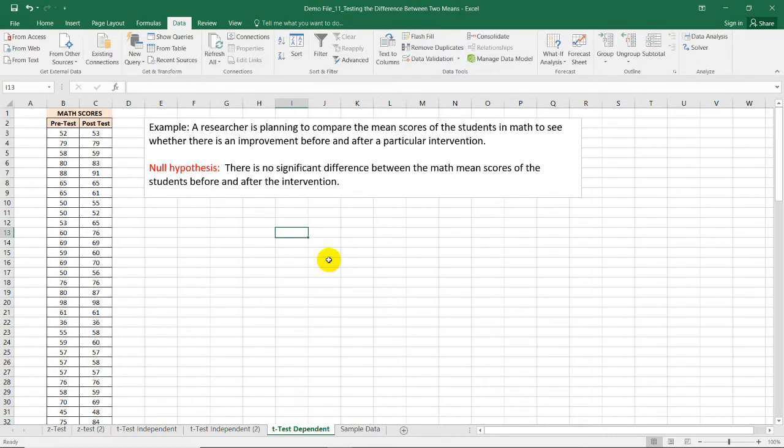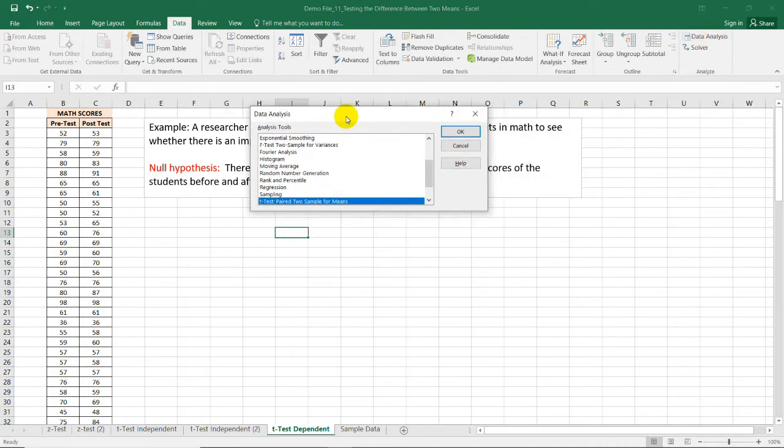To start the analysis, go to Data Ribbon. Select this Data Analysis function. If you don't have this function, make sure to check my video about its installation tutorial. Now, select the t-test paired to sample for means.